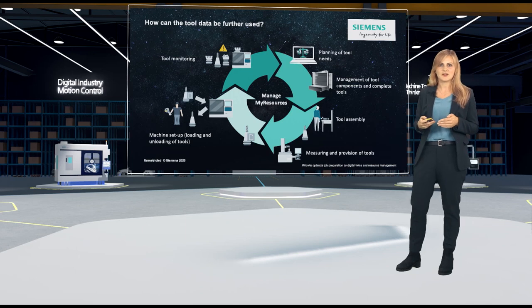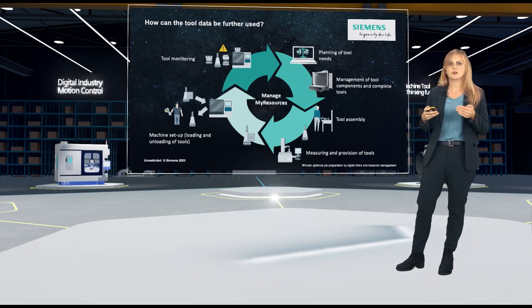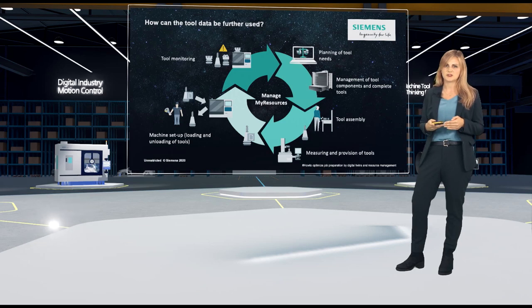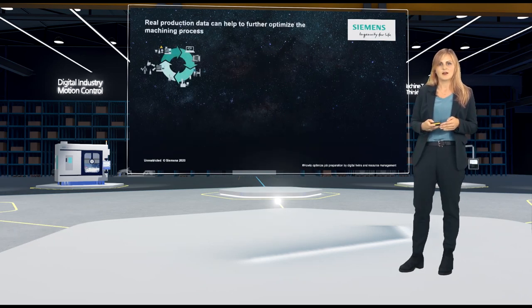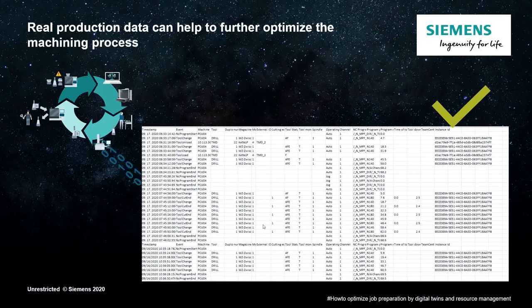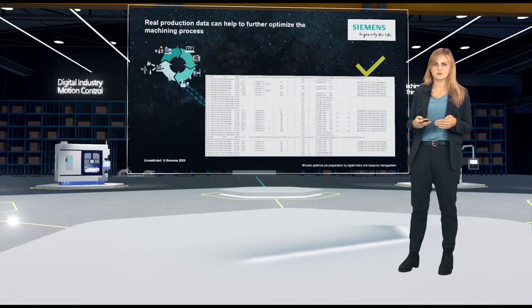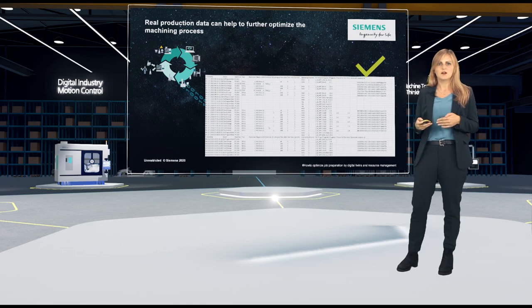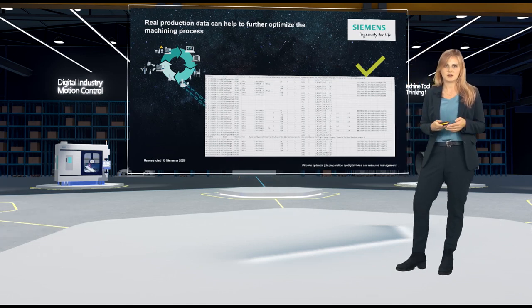You have now seen the tool cycle and how ManageMyResources can help to optimize it. Throughout the cycle, a lot of data is created, so it would make sense to continue using this real production data. ManageMyResources automatically collects data for each tool, like when it was brought to the machine, when it's changed into the spindle and by which active NC program, and also how much machining and how much idle time are required. This gives, for example, the NC programmer the opportunity to further improve the machining process based on real production data. As you can see, another cycle for optimization can start.